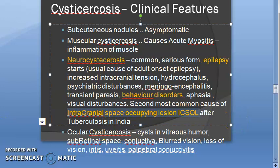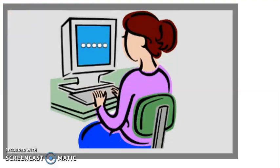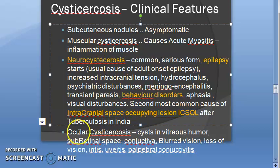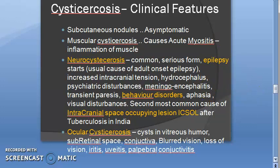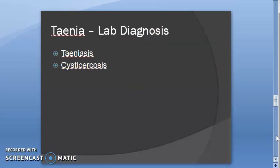Ocular cysticercosis: the eye is also affected. Cysts are present in the vitreous humor, subretinal space, and conjunctiva. This causes blurred vision, loss of vision, iridopharyngeal uveitis, and palpebral conjunctivitis. That completes the clinical features. Next we will handle lab diagnosis of taeniasis and cysticercosis separately.